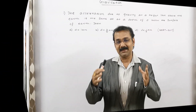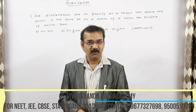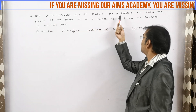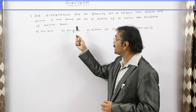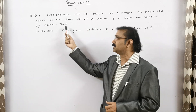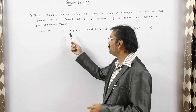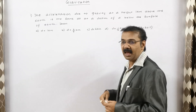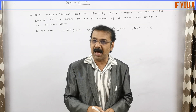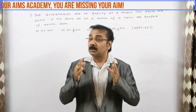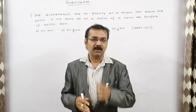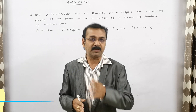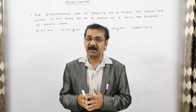Now it's time to go into the session of gravitation. See the question here: the acceleration due to gravity at a height of one kilometer above the surface is the same as at a depth of d below the surface of the planet. Then d is equal to — option A: one kilometer, option B: three by two kilometers, option C: two kilometers, option D: one by two kilometer. This question was asked in May 2017, so go through all previous question papers as some sums will repeat in the coming 2021 exam.